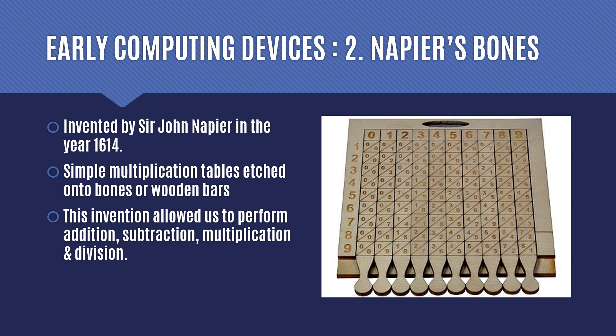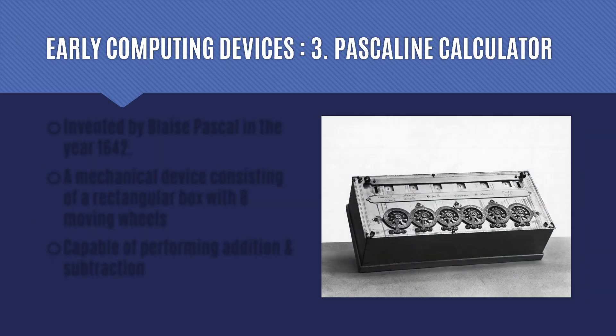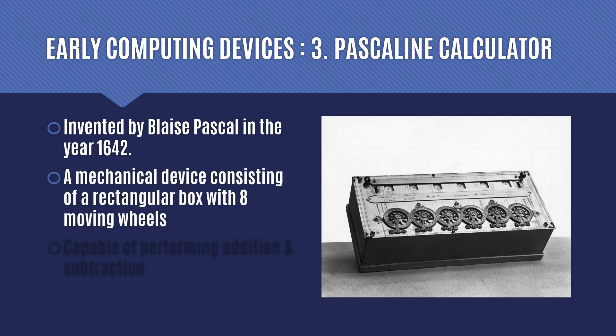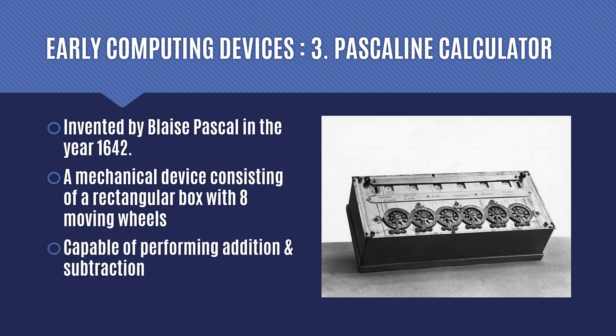The third device was the first mechanical device, known as the Pascaline or Pascaline Calculator. It was invented in the year 1642 by Blaise Pascal, who was also a mathematician. This device consisted of eight wheels — it was a box structure containing eight moving wheels — and it was capable of performing addition and subtraction. This was the first mechanical device, meaning it had moving parts.